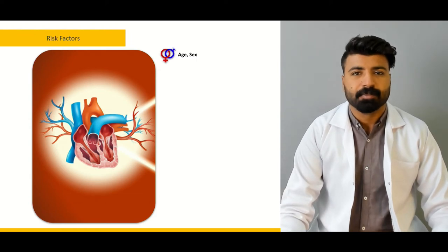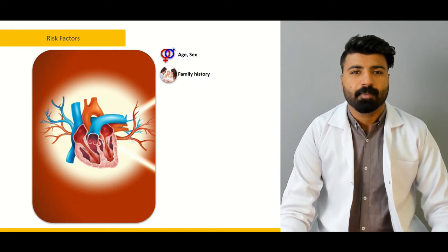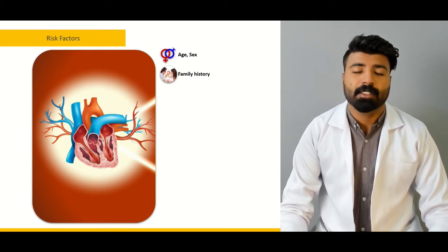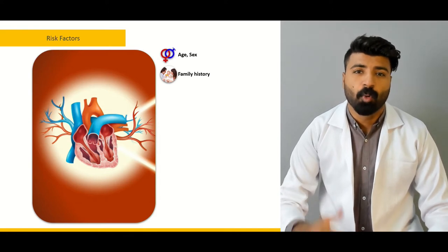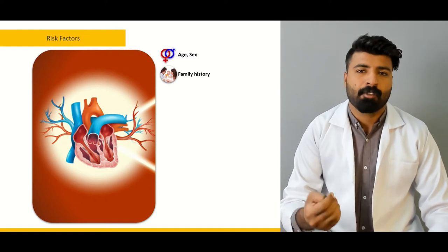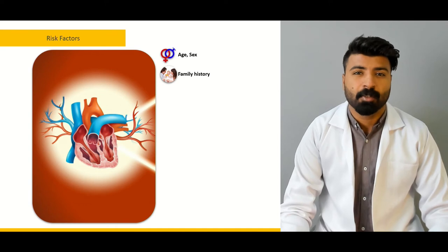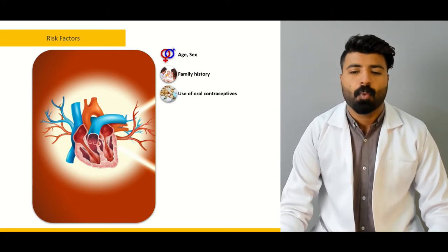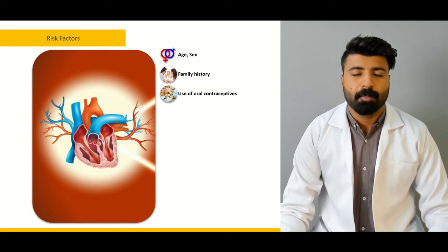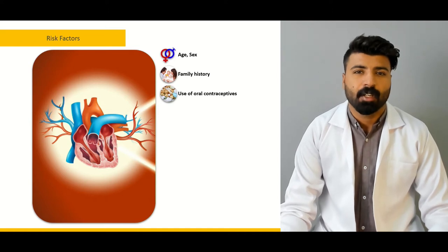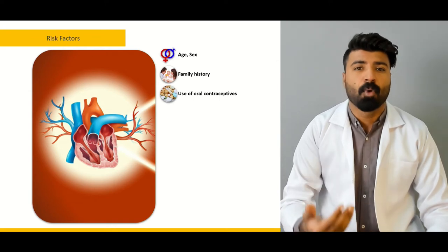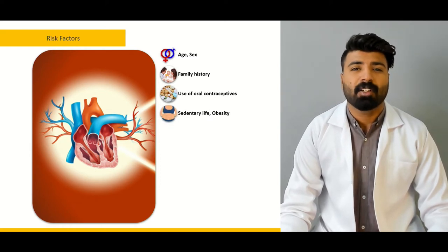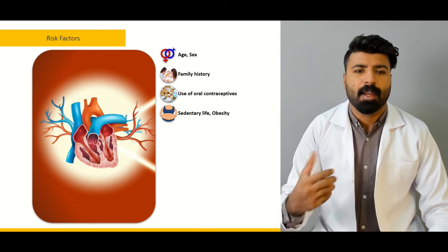Family history is another risk factor: families with ischemic heart disease have increased predisposition, suggesting it runs in certain genomes and populations. Oral contraceptive use is also a risk: females who use oral contraceptives after age 30 and smoke have significantly more chances of getting ischemic heart disease. Additionally, sedentary lifestyle and obesity - both external and internal organ obesity - play a major role.